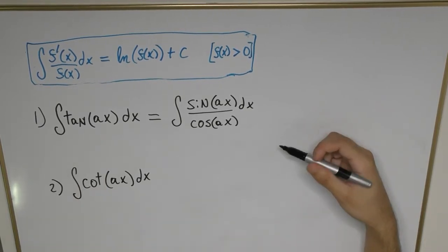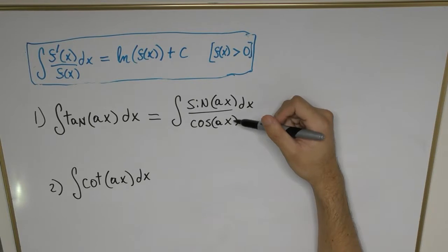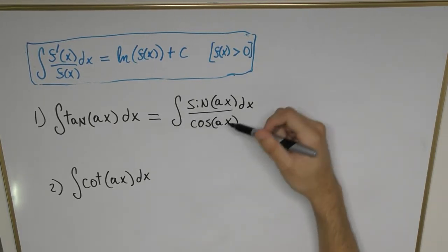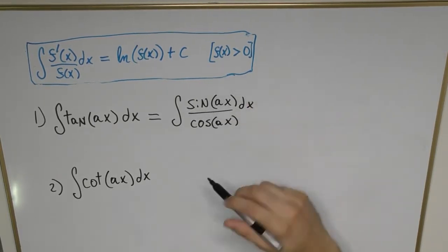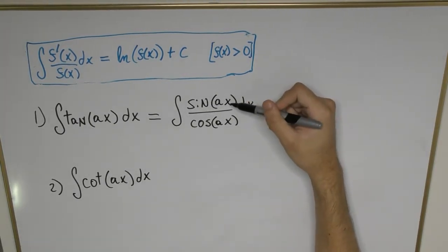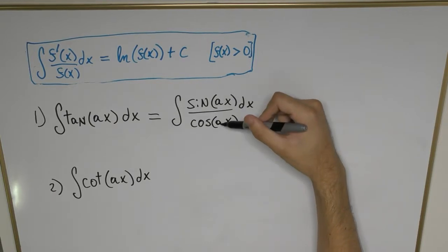Here's the key: if you look closely, the numerator sine of ax is the derivative of the denominator cosine of ax. If we carry out that differentiation, the derivative of cosine of ax